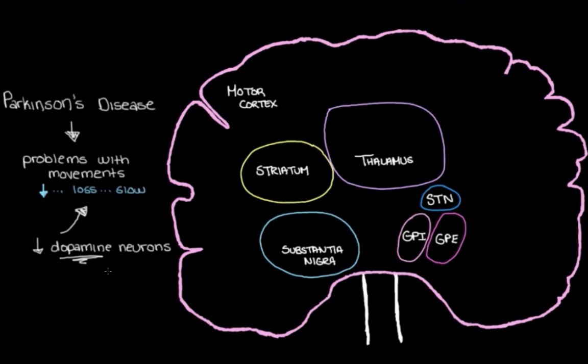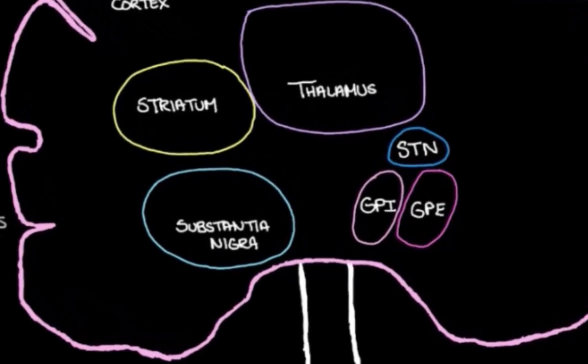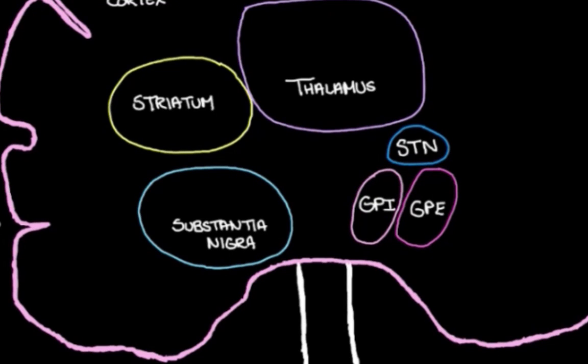Let's start off by jumping over here to the substantia nigra. And you might remember that the substantia nigra is the main area in the brain where we see this big loss of dopamine neurons. So we have these dopamine neurons here in the substantia nigra. They head over, they project to the striatum. So here's some dopamine neurons in the substantia nigra and they go over here to the striatum.